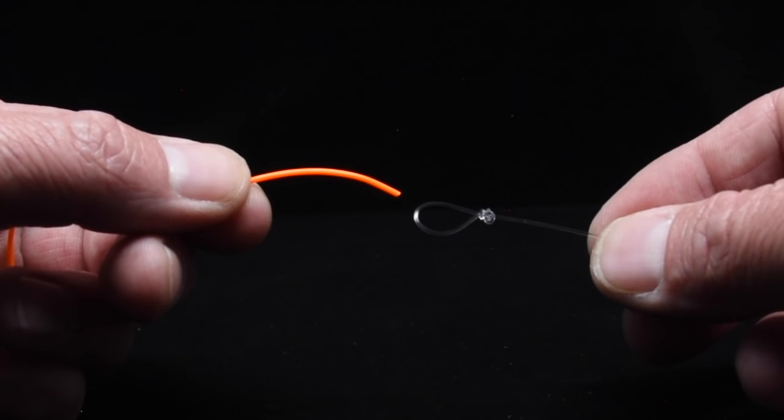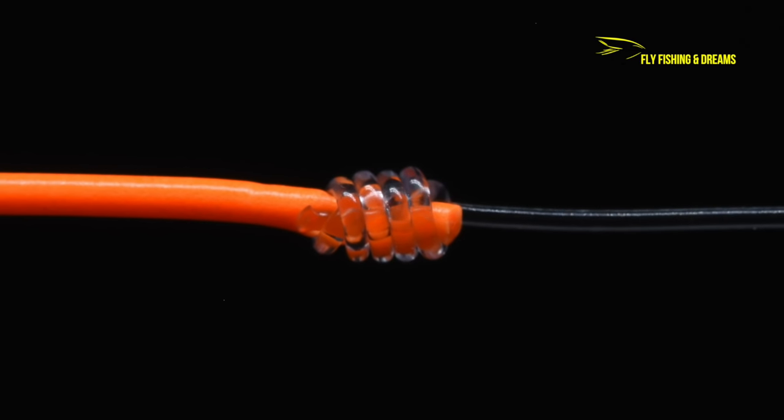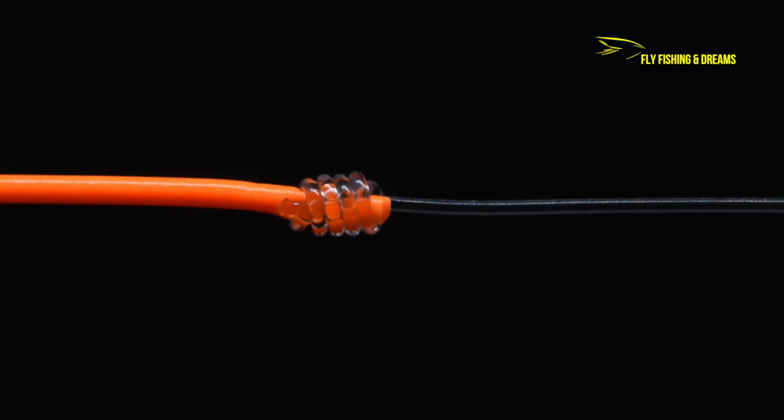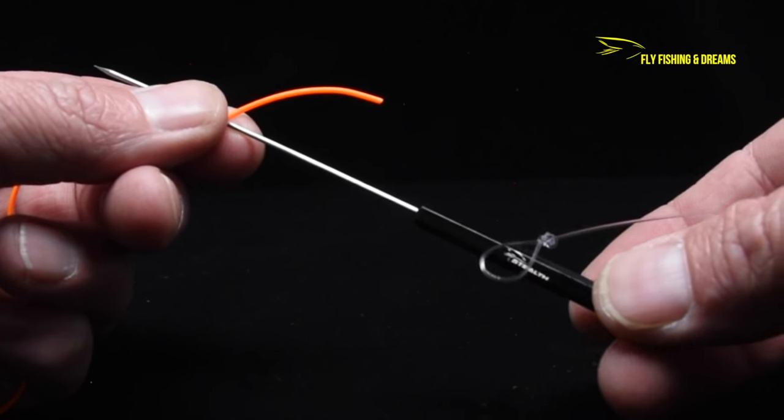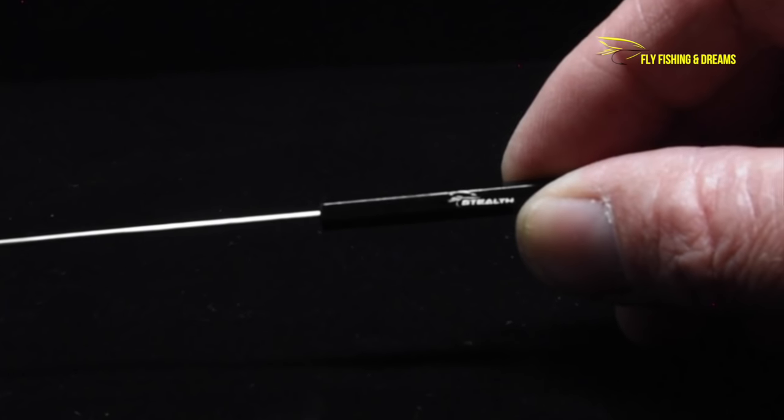I'm going to show you a super easy method of attaching a leader to a fly line with a nail knot using only a bodkin needle. I'm using this stealth bodkin needle because it has the perfect diameter and length.